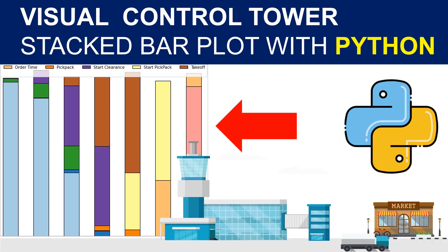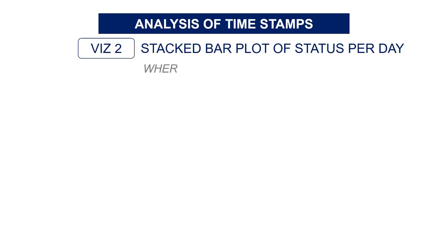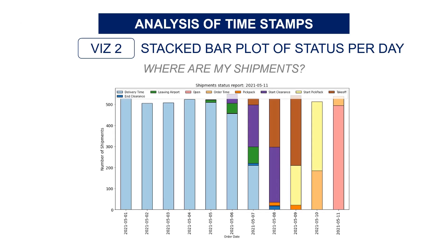Today we will see how to plot a simple stacked bar plot that is used in logistic continuous improvement. I have used this visual for a video and an article related to the design of an automated supply chain control tower using Python. The idea is to connect to different systems to build a solution that will track shipments along the distribution network of a fashion retail company.